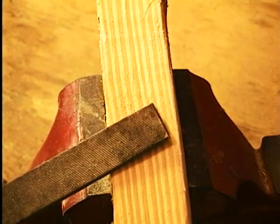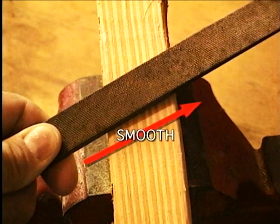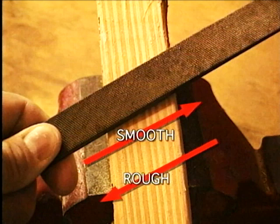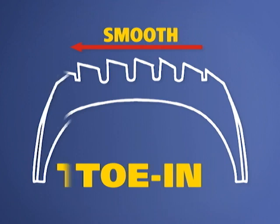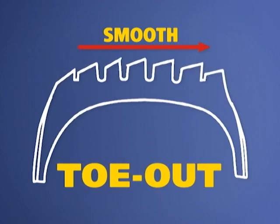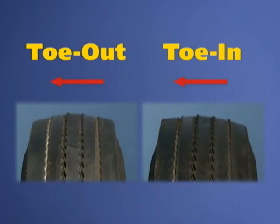An analogy would be using a file on a block of wood. The wood will be smooth in the direction of filing and rough in the opposite direction. A simple rule of thumb to remember when analyzing steering tire wear is: smooth in means toe in, smooth out means toe out. If one front tire indicates toe in and the other indicates toe out, the issue is most likely drive axle misalignment.